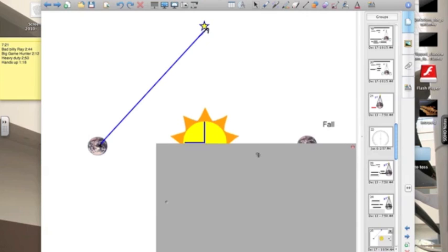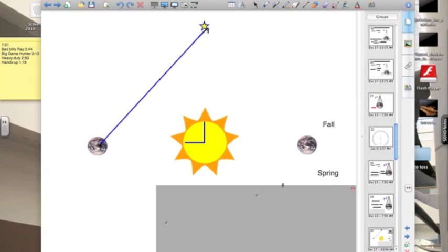One of the biggest baselines we can get involves our revolution around the sun. If we view a distant star during the spring and then wait 6 months until the fall and view it again, we'll have a huge baseline, a baseline of 1 AU.